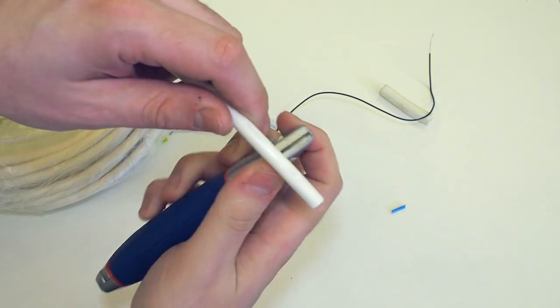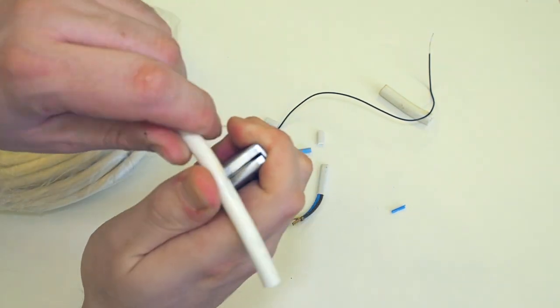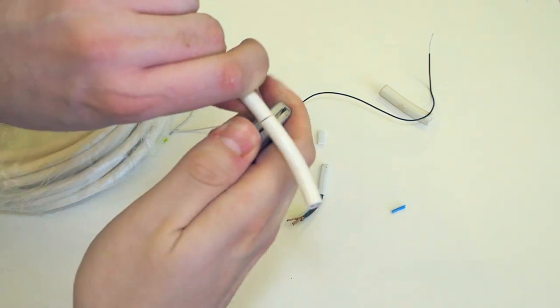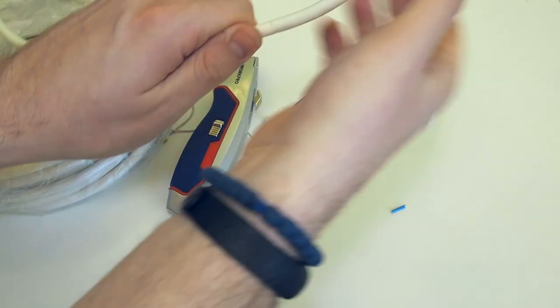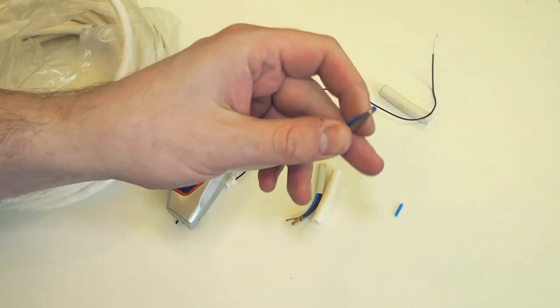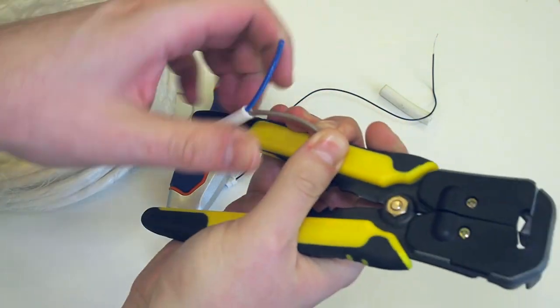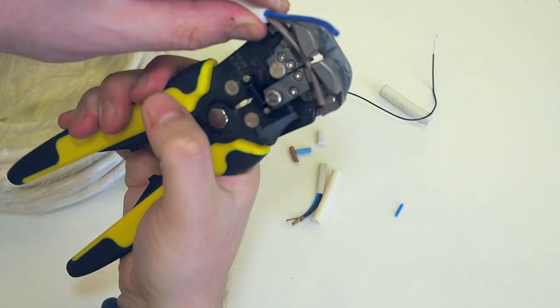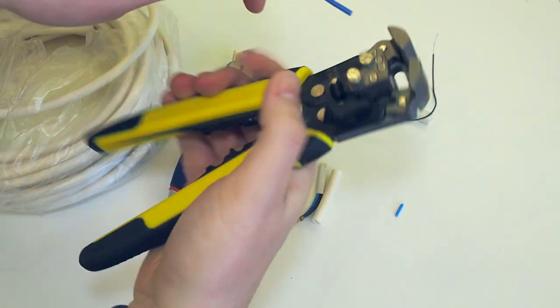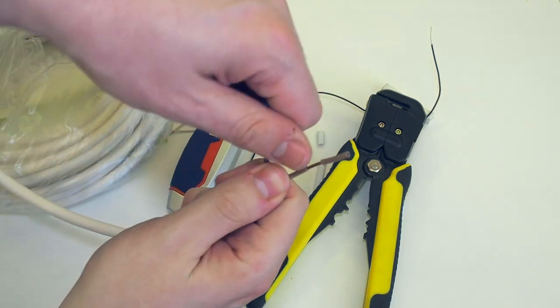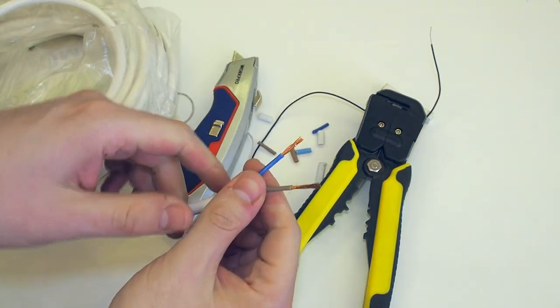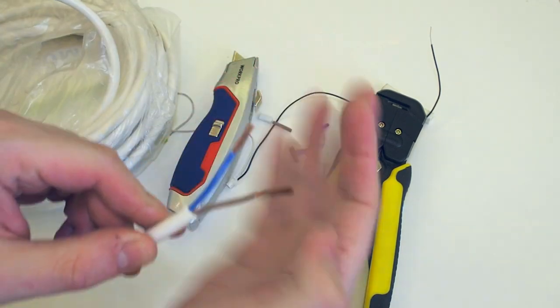Let's do one more. Again removing the insulation with a knife. Review about this knife you can find on my channel. So let's strip these wires and again works like a charm. Great.